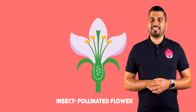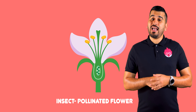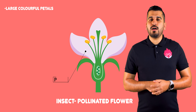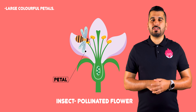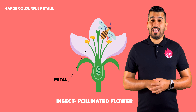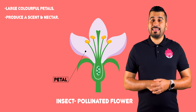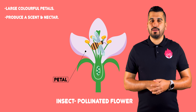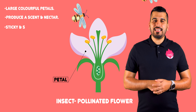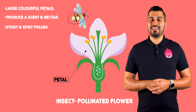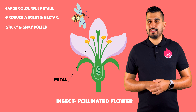Looking firstly at the insect pollinated flowers, they have the following features. They have large colorful petals to attract insects. They have a scent and nectar to attract insects to the plant. They have sticky, spiky pollen grains to attach to insects.